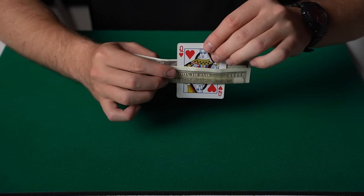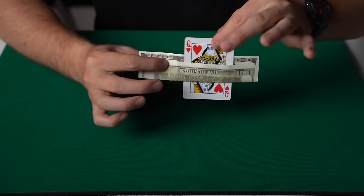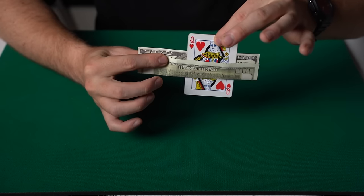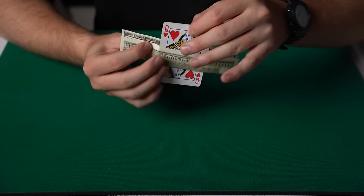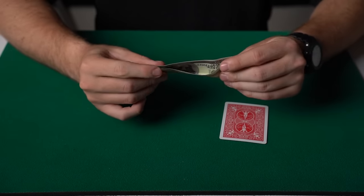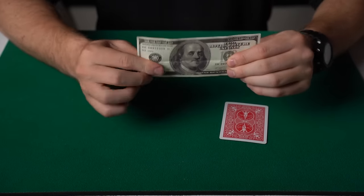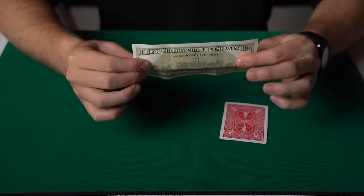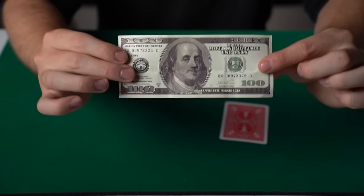Look how visual that looks. But at the same time, he can then even move the playing card around through the bill as it melts right through the middle of it. And then whenever he wants, he can pull the playing card out of the money and hand this note out to be inspected. There are absolutely no holes, as you can see there.